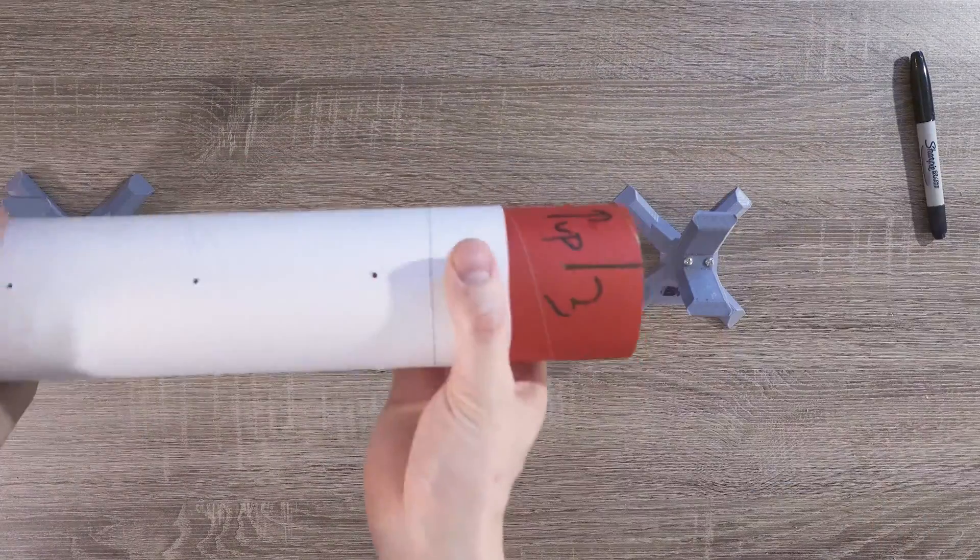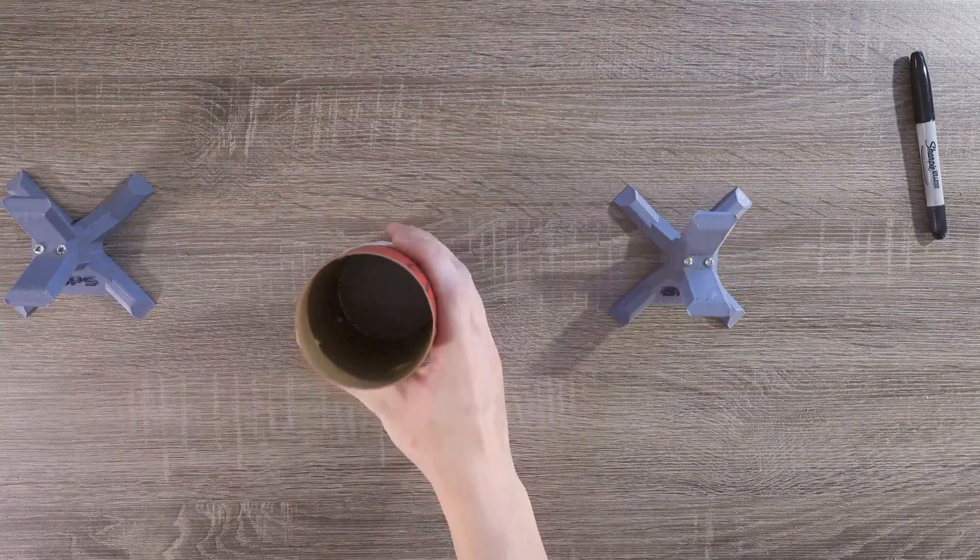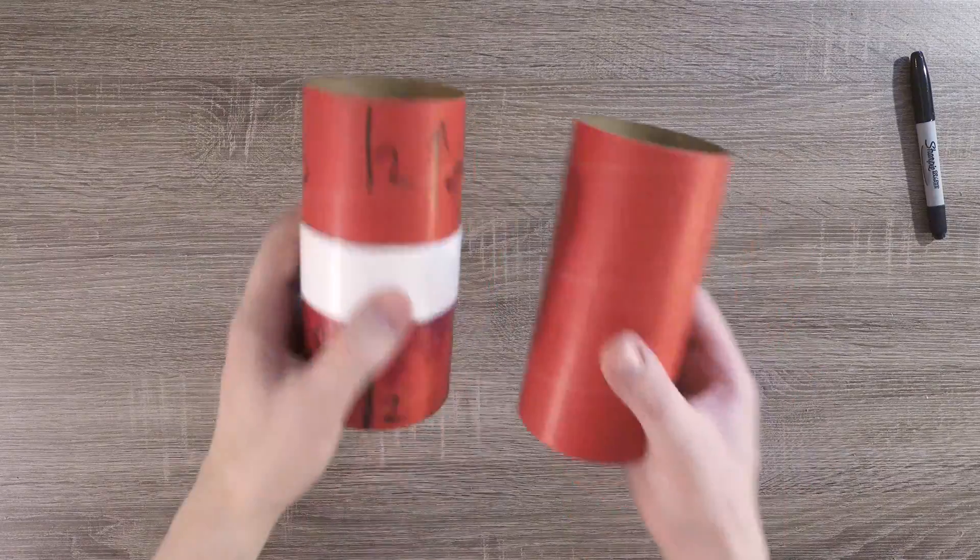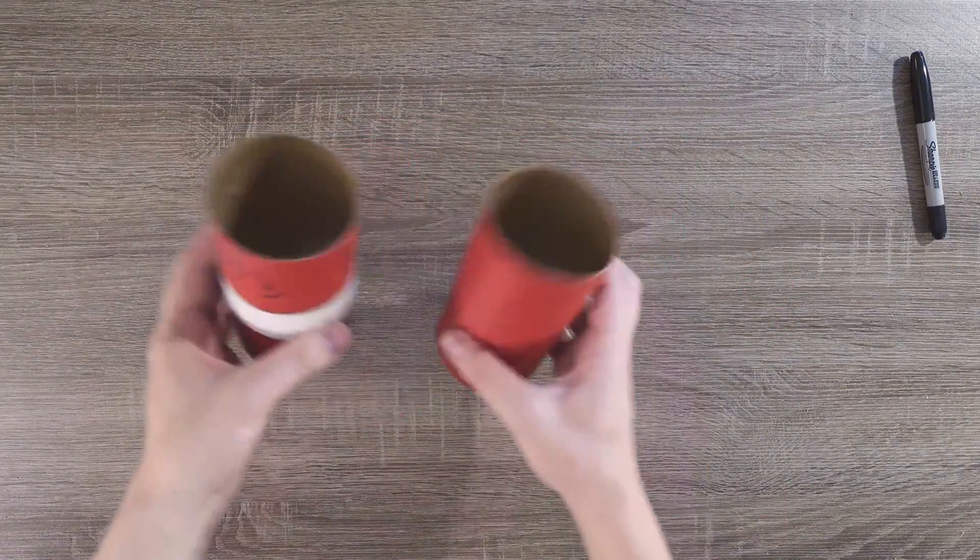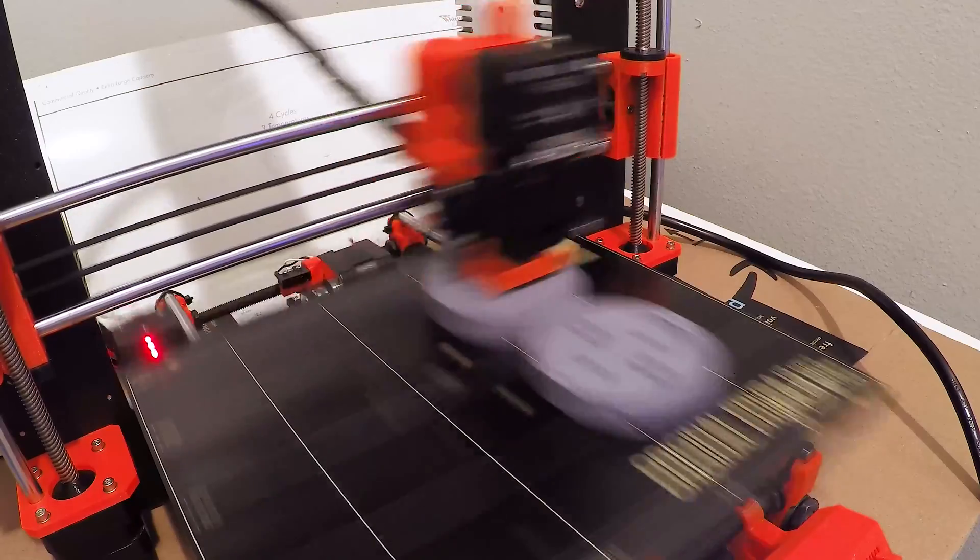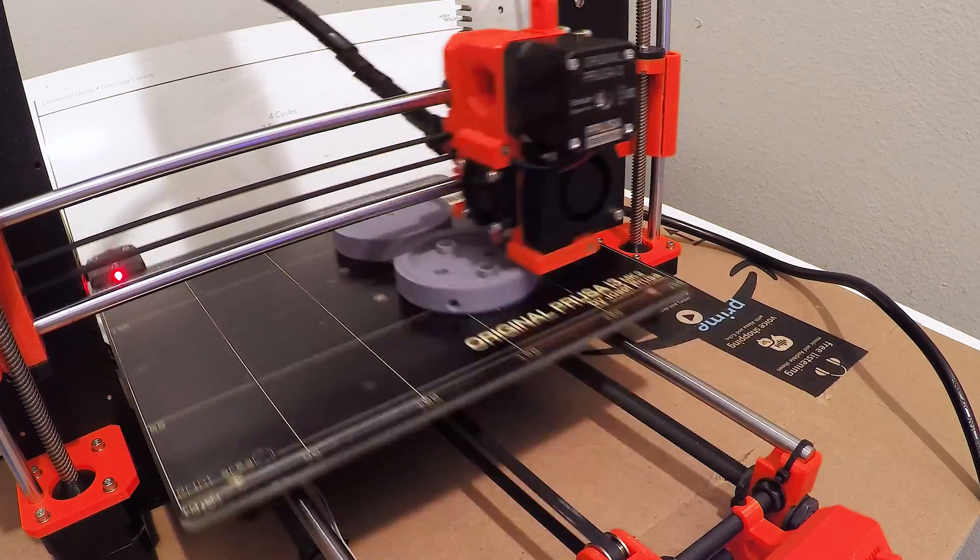In this video, we'll be building a piston-based parachute ejection system for the rocket. A few of the parts that we'll be using are 3D printed. If you want to do this yourself and have access to a 3D printer, the files for download are in the description below.